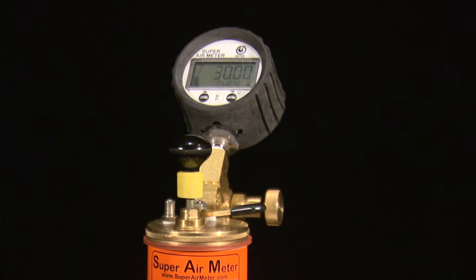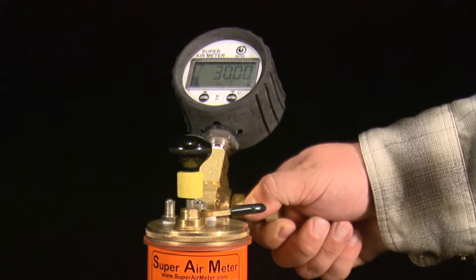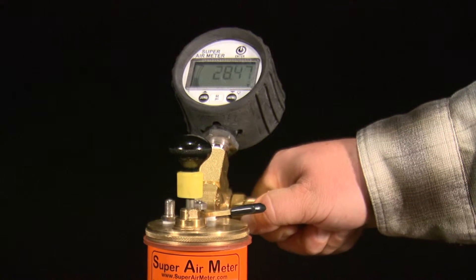Super Air Meter has made an improvement to the meter making it easier to dial in the desired pressures by replacing the pop valve with a needle valve behind the SAM gauge.